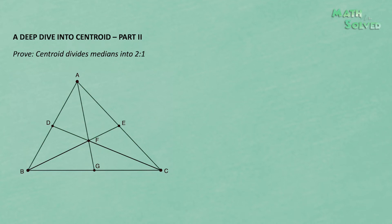Last video, we proved that three medians in a triangle intersect at one point, called a centroid. In geometry class, we also learned that the centroid divides the median into a 2-to-1 ratio. Today, we are going to use two different methods to show a proof. The first method we are going to use is called the area method.